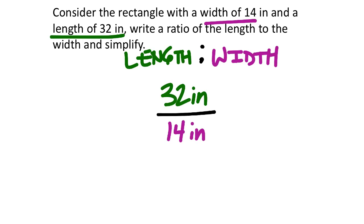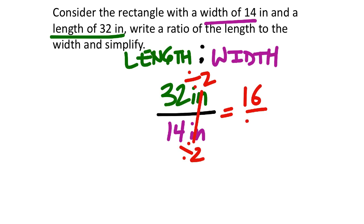The length, 32 inches, is our numerator and the width, 14 inches, is our denominator. The inches will cancel out. Since 32 and 14 are both even, I divide both by 2: 32 divided by 2 is 16, 14 divided by 2 is 7. So the answer is 16 sevenths, confirmed by the calculator as well.